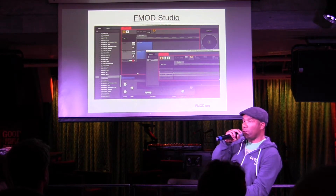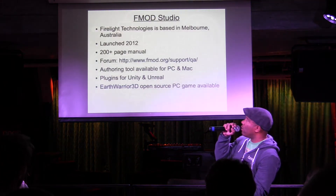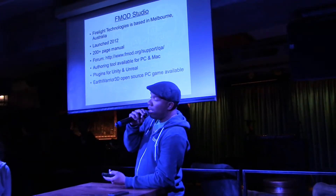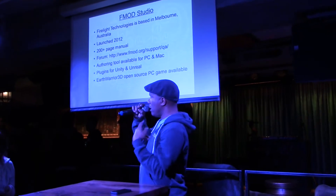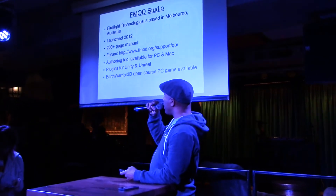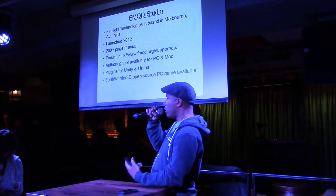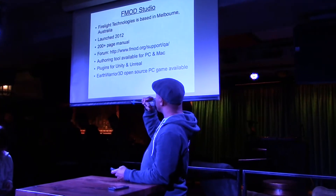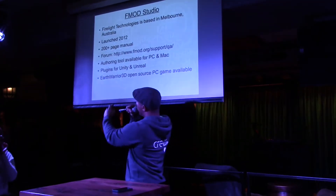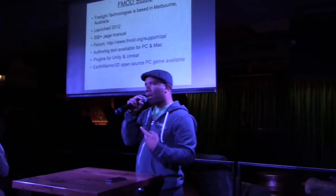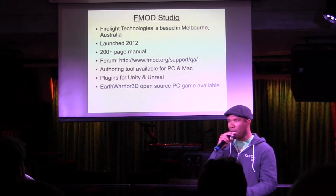The next option is FMOD Studio. This one is used a lot as well, and it sort of looks a little bit like Ableton. They're based in Australia and launched a couple of years ago. Previously they had FMOD Designer, but they basically rewrote everything and started all over again with FMOD Studio on a new, clean code base. The authoring tool is available for PC and Mac, with plugins for Unity and Unreal. If you look up Earth Warrior 3D on GitHub, you can see all the changes required to integrate it into your game.